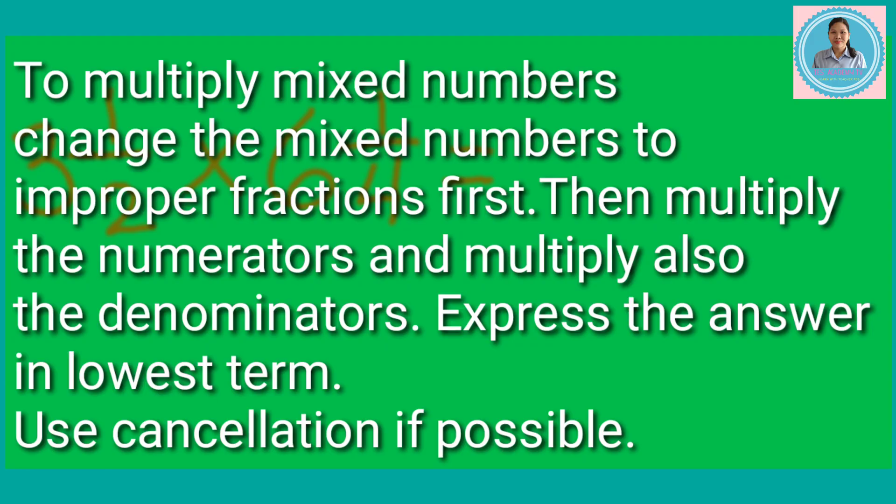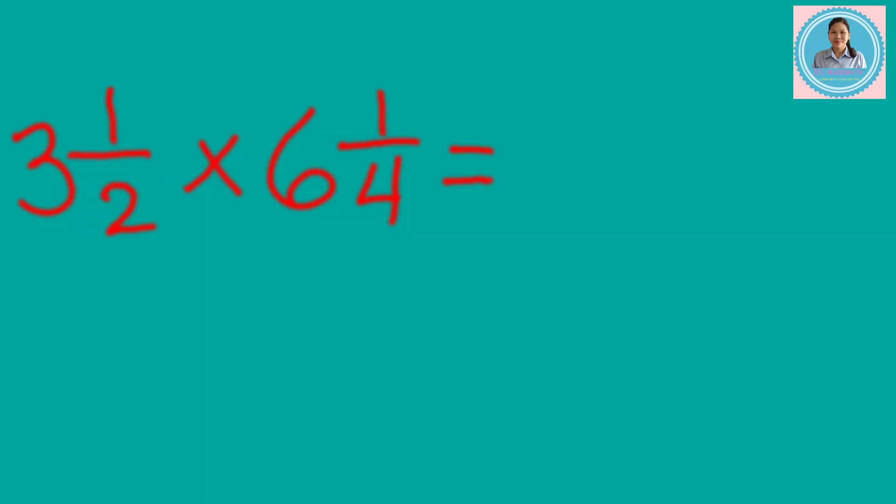To multiply mixed numbers, change the mixed numbers to improper fractions first. Then, multiply the numerators and multiply also the denominators. Express the answer in lowest term. Use cancellation if possible.